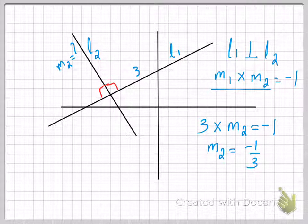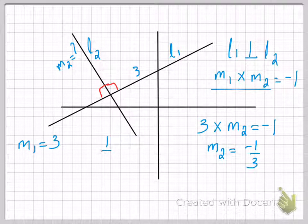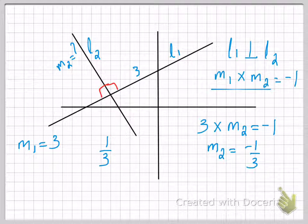You can either remember it this way, that their product will be minus one, or you can remember it that if two lines are perpendicular, their slopes will be negative inverse of each other. What do I mean by that? If M1 is three, its inverse will be one over three. Inverse is basically the same thing as reciprocal.